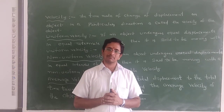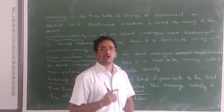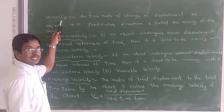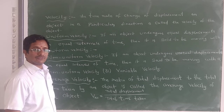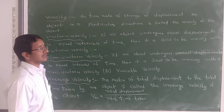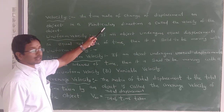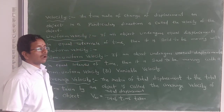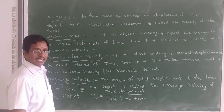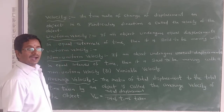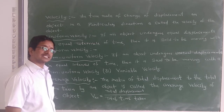Now I will explain one by one on the board. Please observe carefully. Point number one: Velocity. The time rate of change of displacement of an object in a particular direction is called the velocity of the object. It is a vector quantity. The unit is meter per second.